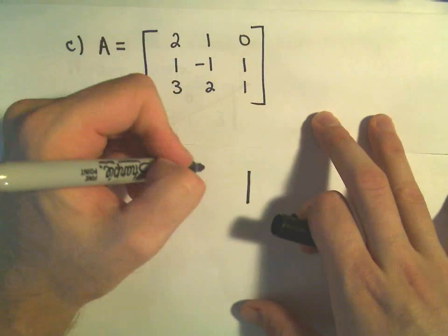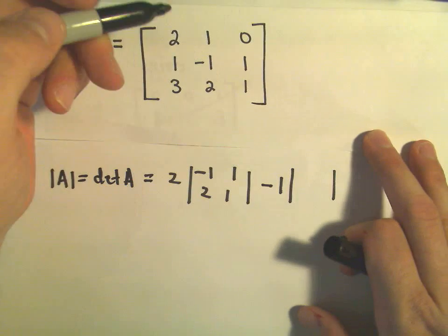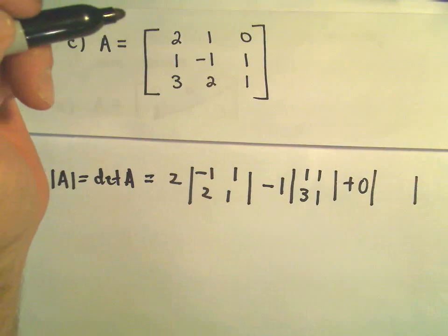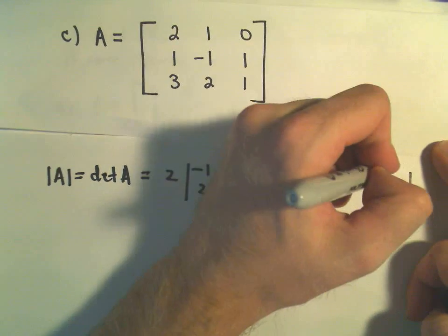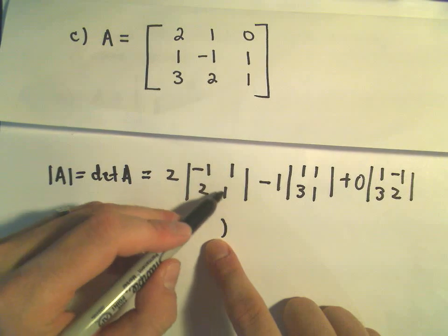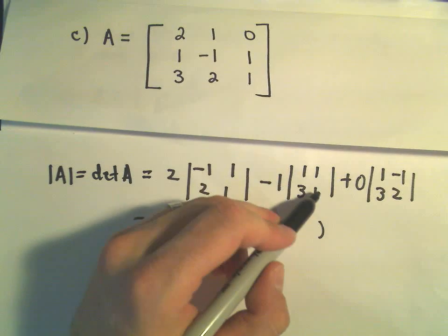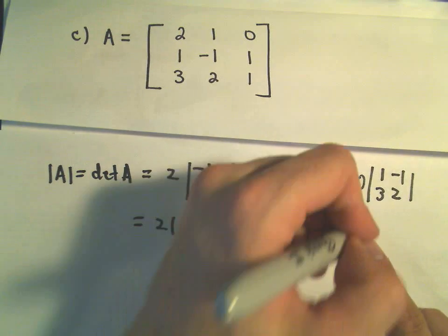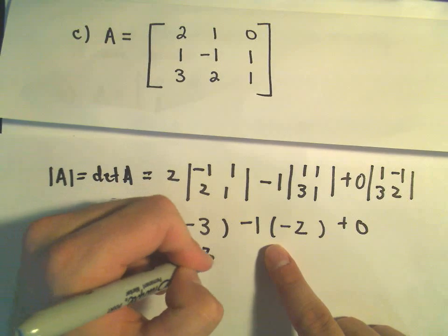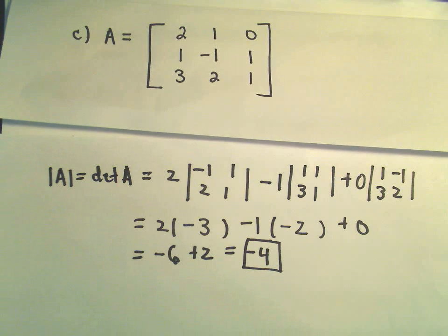We get 2 times the determinant of [-1, 1; 2, 1], then negative 1 times the determinant of [1, 1; 3, 1], and lastly 0 times [1, -1; 3, 2] — but we really don't care since it's multiplied by 0. So: negative 1 times 1 is negative 1, giving negative 1 minus 2 = negative 3. Then 1 minus 3 = negative 2. The last term is 0. That gives negative 6 plus 2, so the determinant is negative 4.